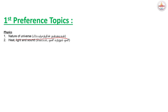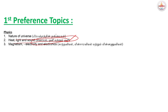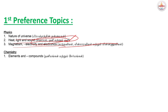Next plan is administration classes. Heat, light and sound — this is a very important topic. Next, magnetism, electricity and electronics — this is a very important topic. Next, chemistry: elements and compounds, acid bases and salts. Elements and compounds — this is a very important topic.